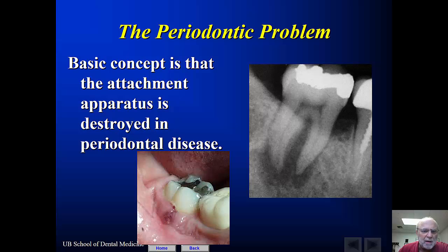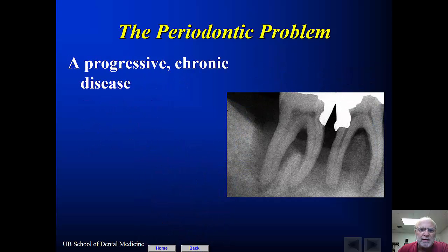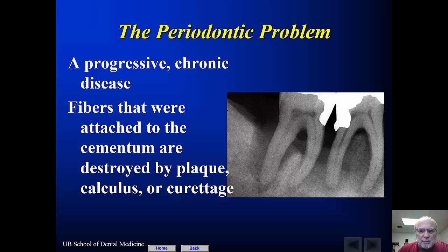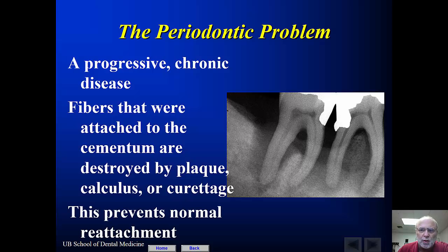The periodontal problem is a bit different. The basic concept with periodontal disease is that the bone and the PDL are destroyed, and the attachment to the cementum and to the tooth is lost. Periodontal is a progressive chronic disease — it does not happen overnight — whereas endodontic disease can happen quite rapidly. The periodontal ligament fibers attached to the cementum can be destroyed by plaque, by calculus, and actually by curettage if you get too aggressive and remove the cementum from the dentin of the tooth, which prevents normal reattachment.